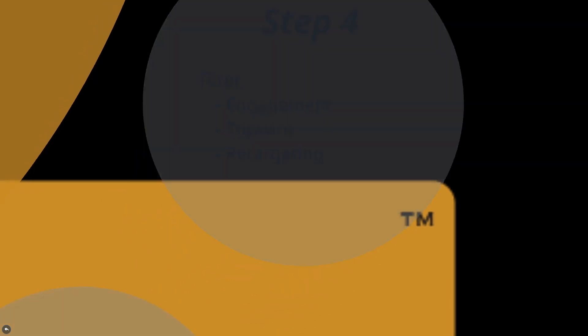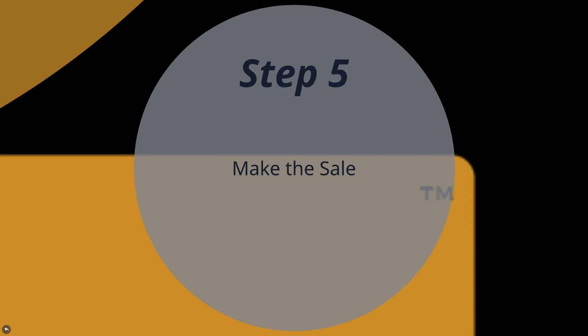Step five is making that sale. By this time, you've taken someone completely cold — most likely they didn't know who you are — warmed them up, put them through the funnel or pipeline where you've been interacting back and forth, showing them your true value, and now you make the sale. This is going to be different depending on what you're selling. It's going to come down to asking questions, being situationally aware of when that buyer is right on the edge — you see the right time to strike and you just reach into their pocket, take their money, and give them the product. It is a transfer of money for value.